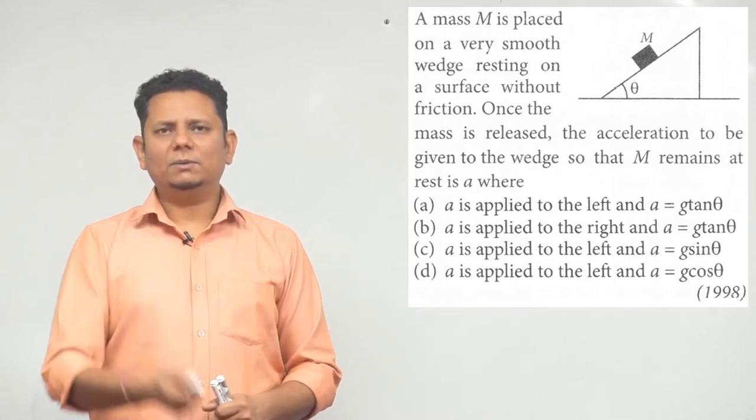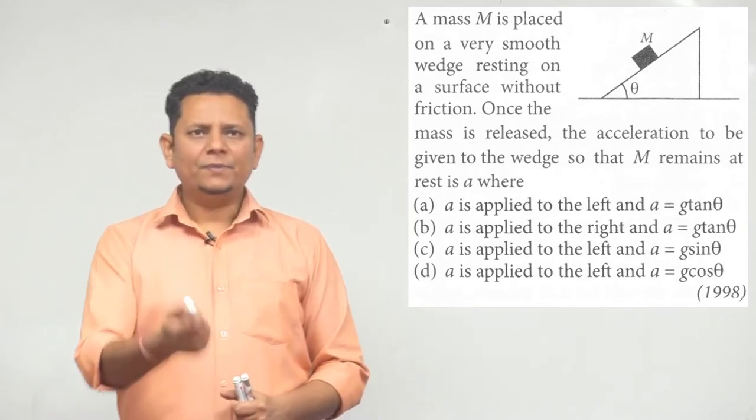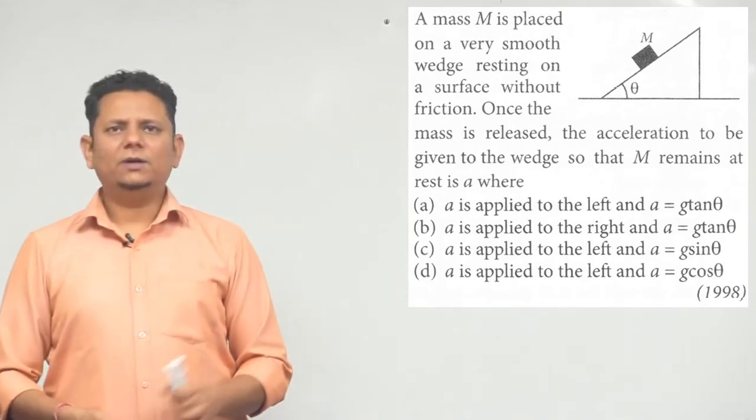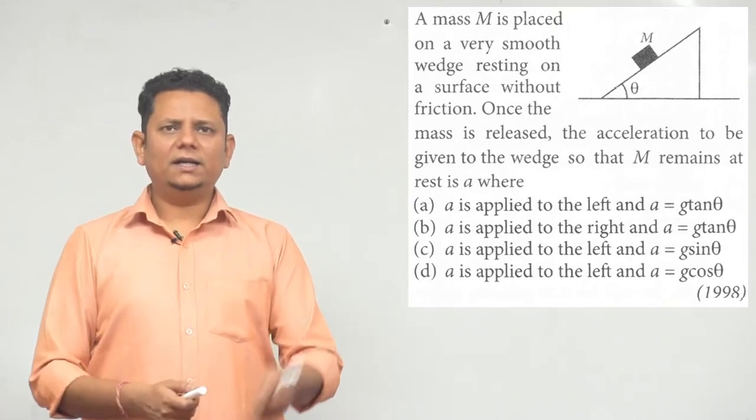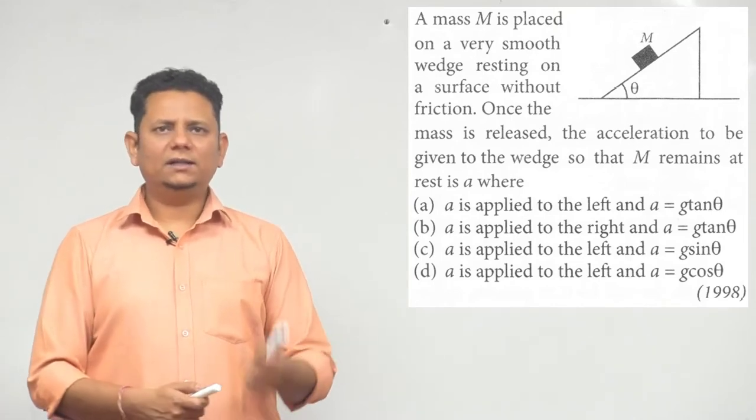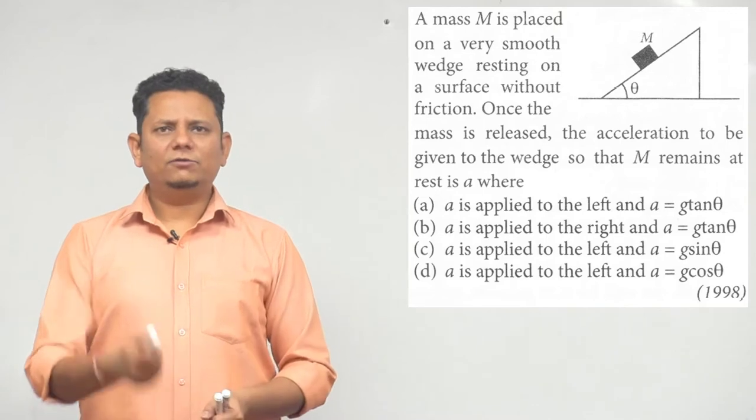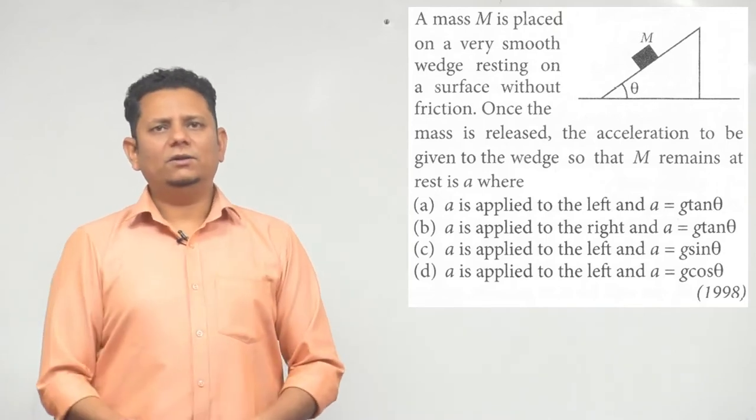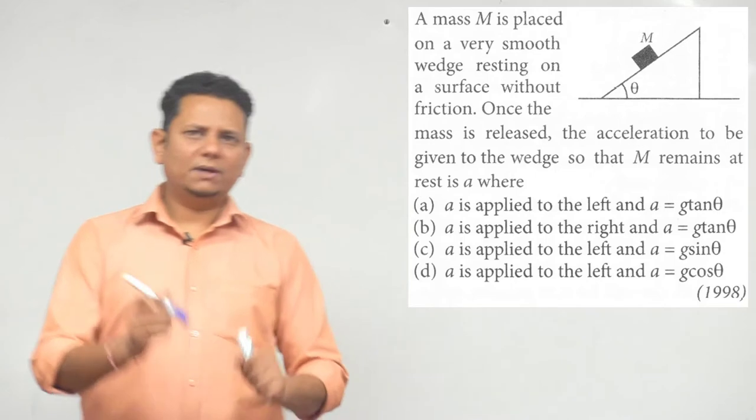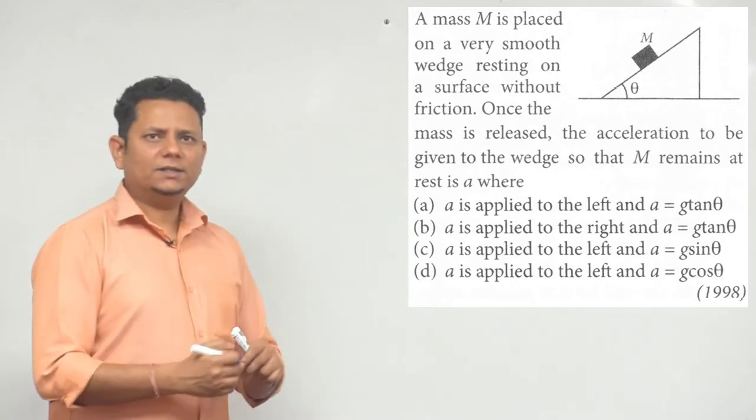We need to find what acceleration will be needed. There are four options: (a) a is applied to the left, a equals g tan theta; (b) a is applied to the right, value g tan theta; (c) a is applied to the left, value is g sin theta; (d) a is applied to the left, value is g cos theta. This is a simple application of pseudo force.